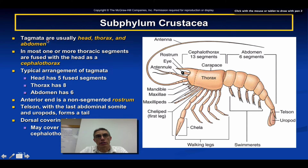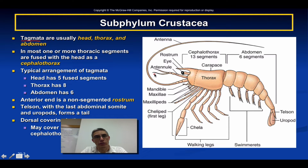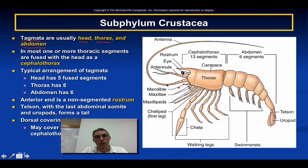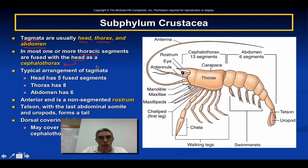Back in Chapter 19, we introduced the term tagmata, which refers to the way you arrange the animal in terms of segmentation. In crustaceans, the typical arrangement has a head, a thorax, and an abdomen. Over here on the right, this would be the head region, this would be the thorax, and this would be the abdominal region. In most crustaceans, there is a fusion between the head and the thoracic region, giving it the name cephalothorax — something you looked at with horseshoe crabs and arachnids.